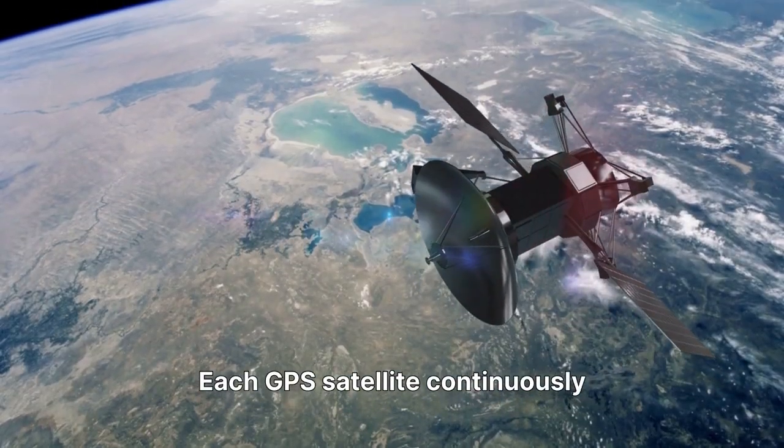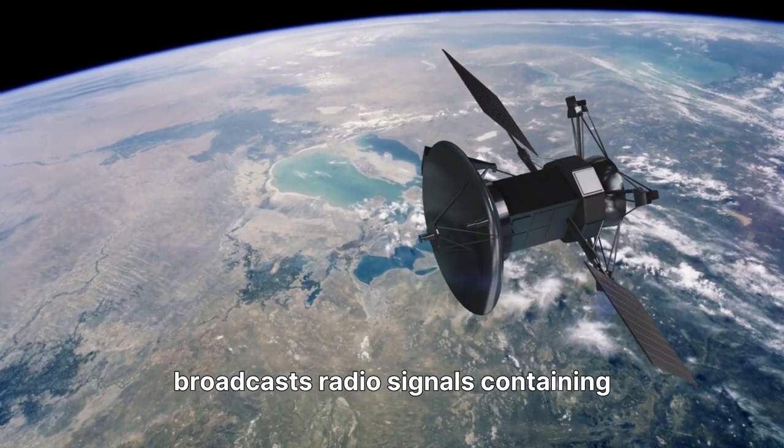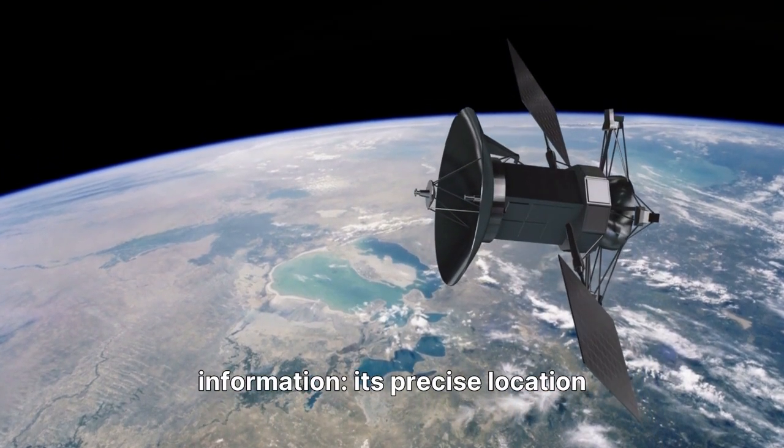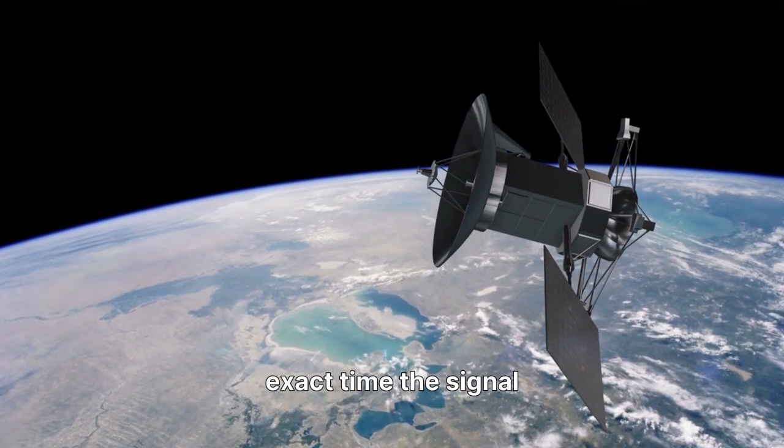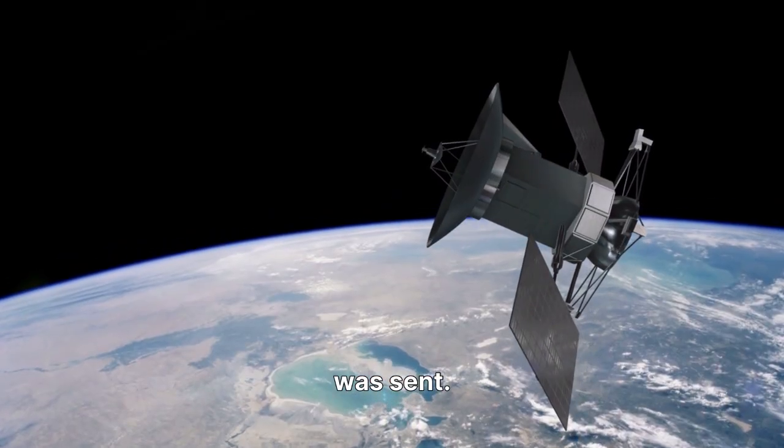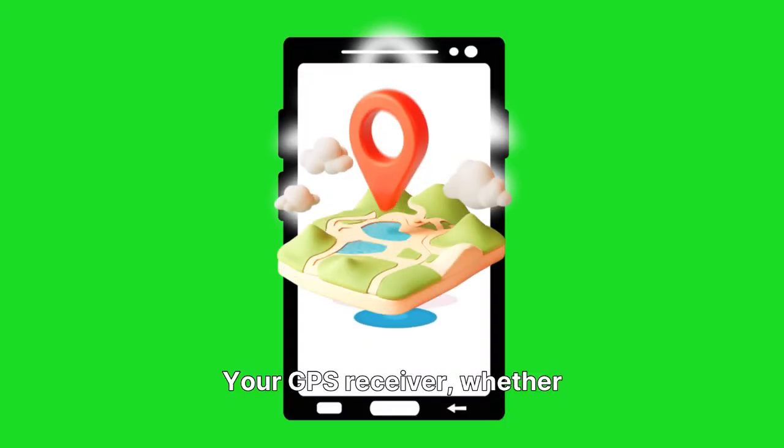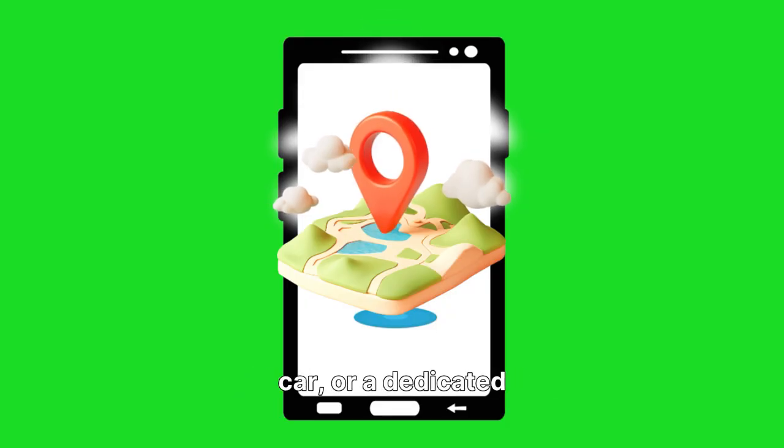Each GPS satellite continuously broadcasts radio signals containing two crucial pieces of information: its precise location in space and the exact time the signal was sent. These signals travel at the speed of light.